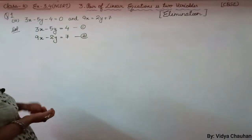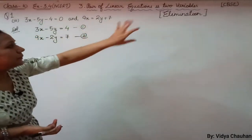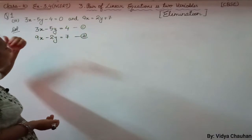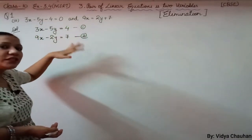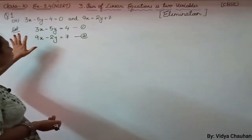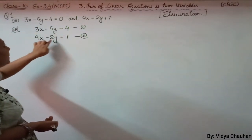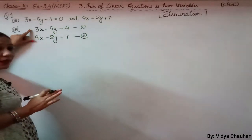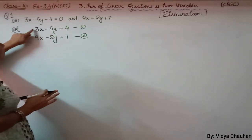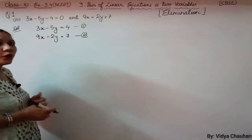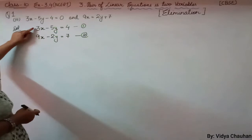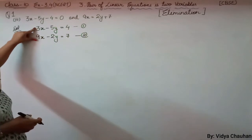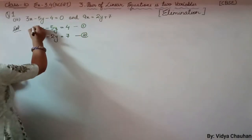Now let us apply the elimination method. Elimination means we completely remove one variable — unlike the substitution method where we substituted a value. Here we want to completely remove any one variable from the equations. The most convenient choice is to remove the variable x from both equations.